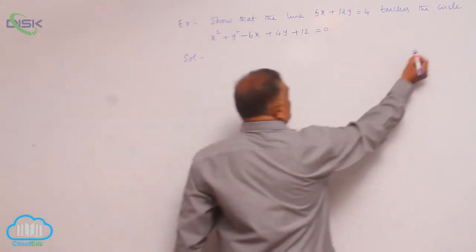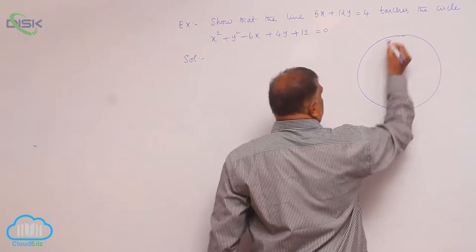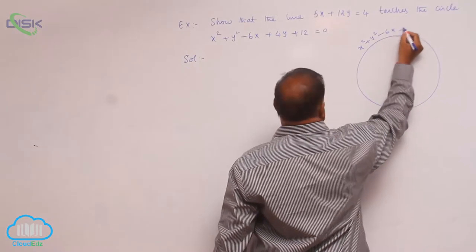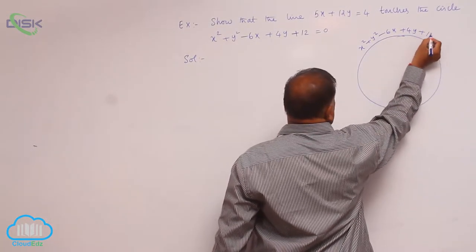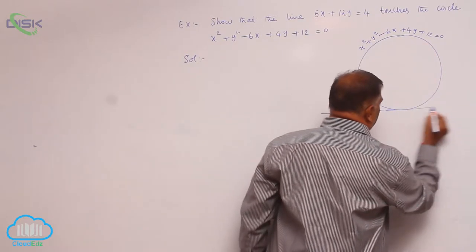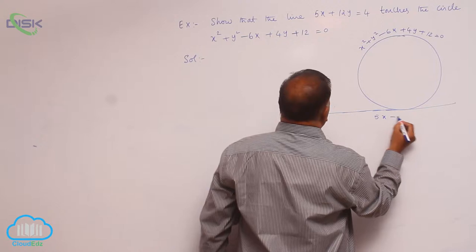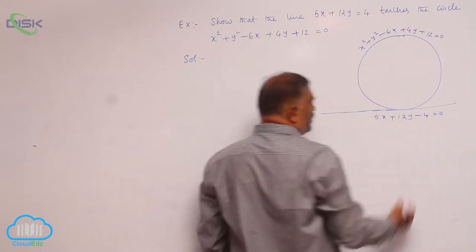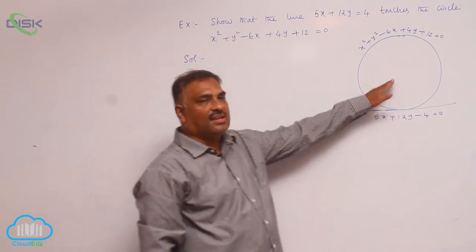So, whenever a circle is like this, it is x square plus y square minus 6x plus 4y plus 12 is equal to 0. And the line is given by 5x plus 12y minus 4 equal to 0. We need to prove that it touches the circle.